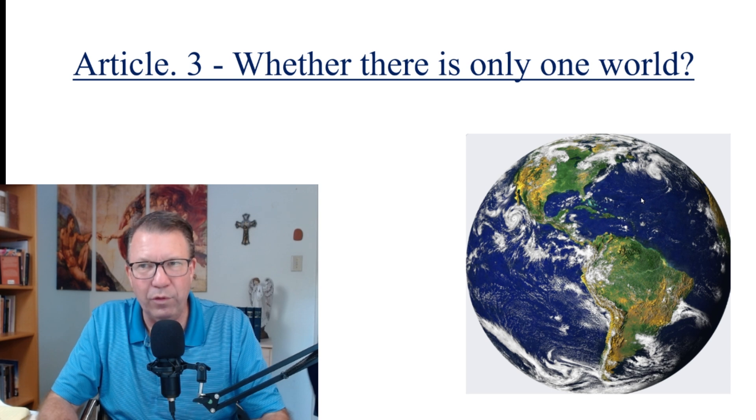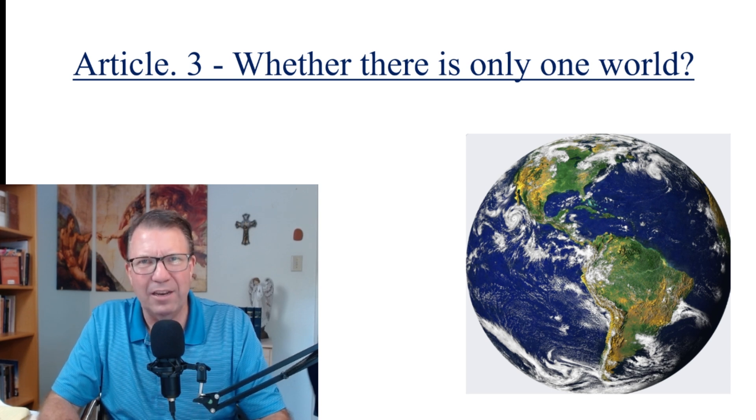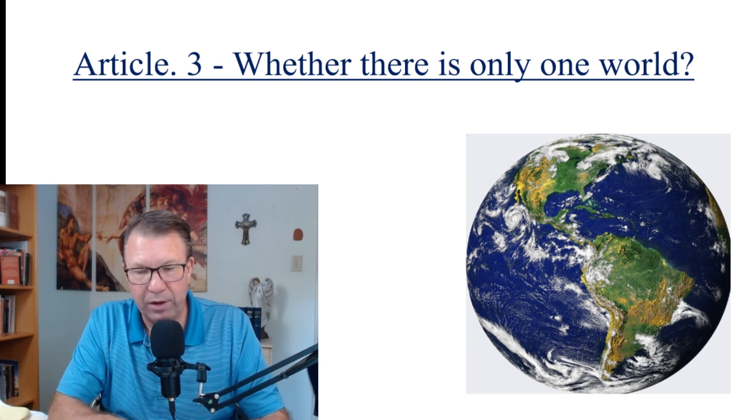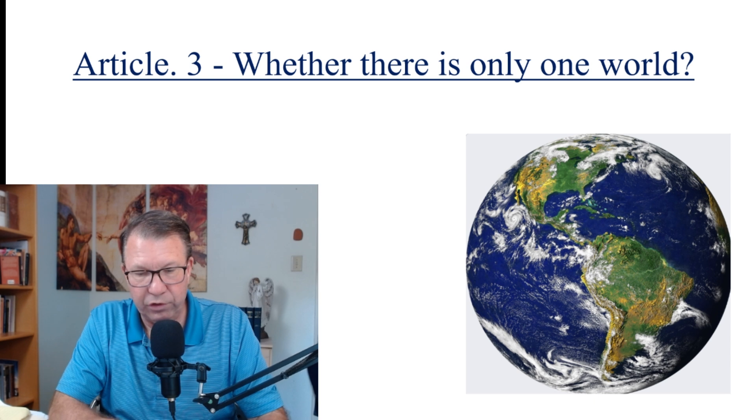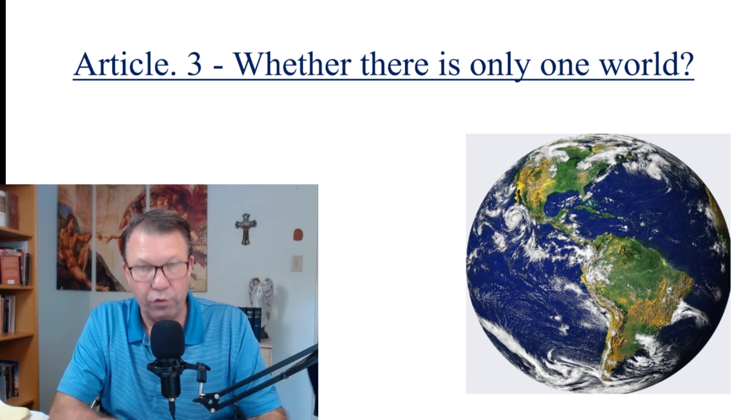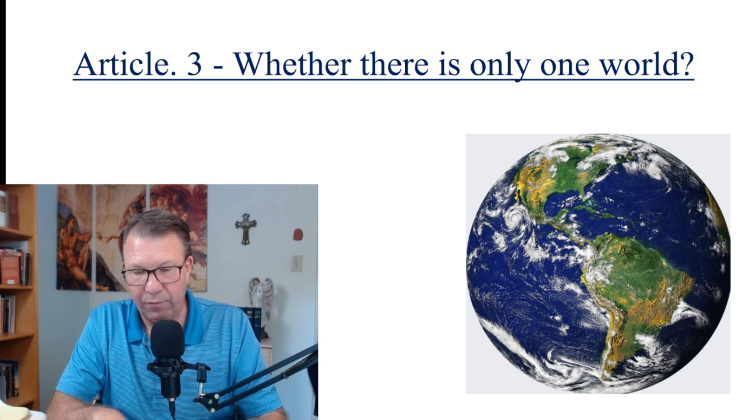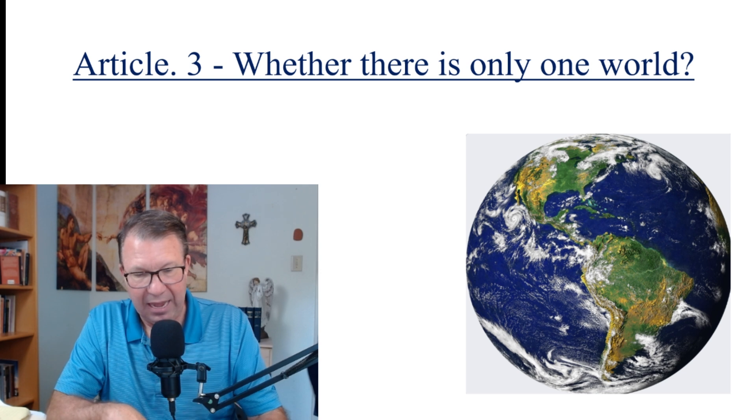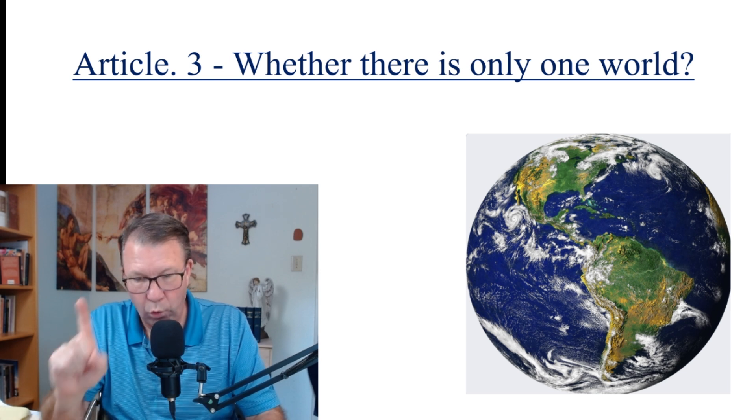So final article, whether there is only one world. Have you ever thought about that? Is there only one world? Thomas is going to say yes and this is his reason. The very order of things created by God shows the unity of the world. For this world is called one by the unity of order whereby some things are ordered to others. But whatever things come from God have relation to order to each other and to God himself. Hence, it must be that all things should belong to one world.